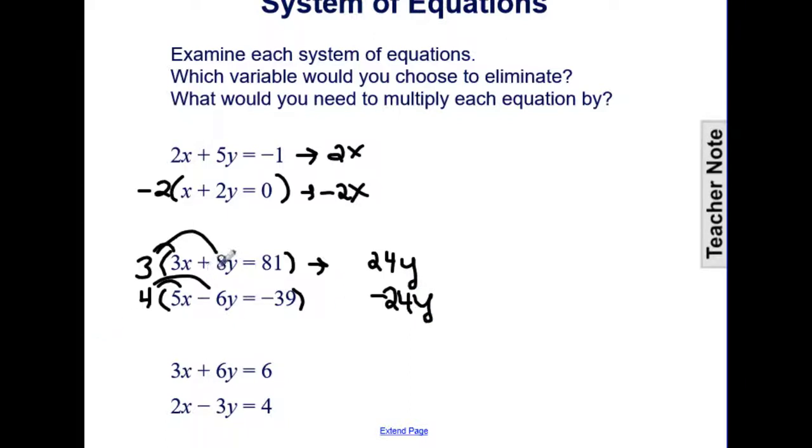So there, I was looking more at the fact that they had opposite signs. Very similar for the third system, I see my opposite signs, and I know that 3 goes into 6, that they have the common coefficient of 6. So I can multiply the bottom equation by just 2, and that will create, the top one will stay 6y, and the bottom will change when I multiply through to negative 6y.